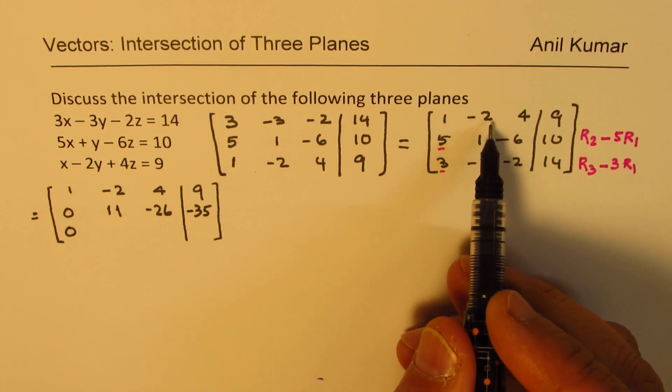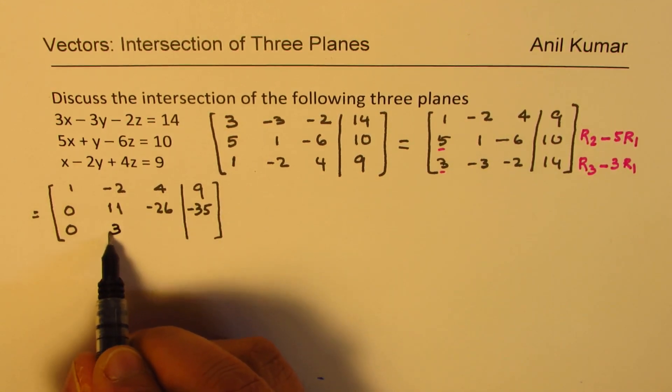When you take away minus 6, you get plus 3 here. Now, 3 times 4 is 12.